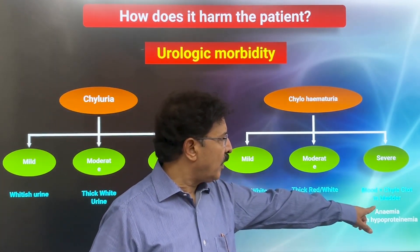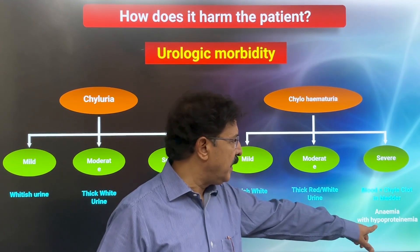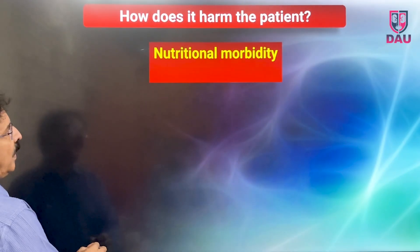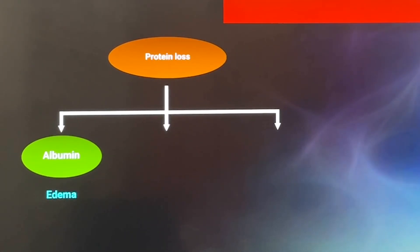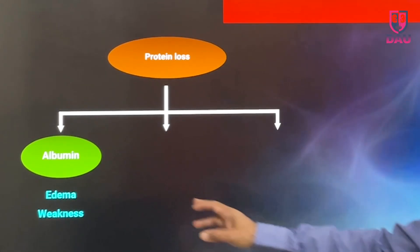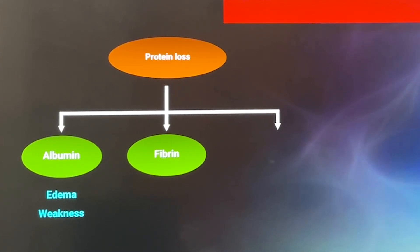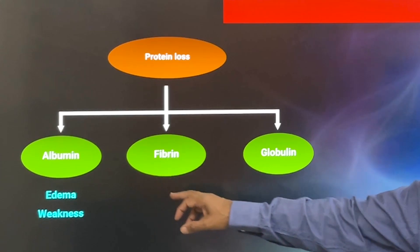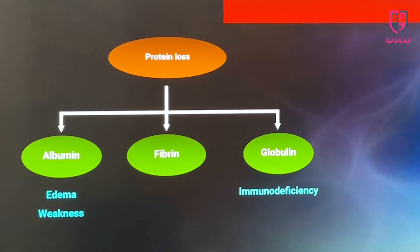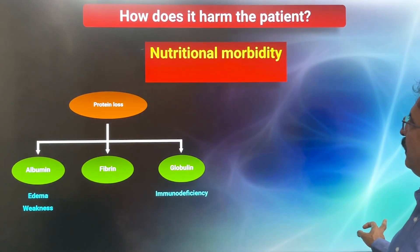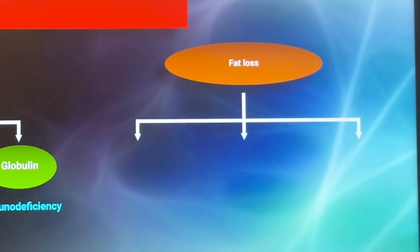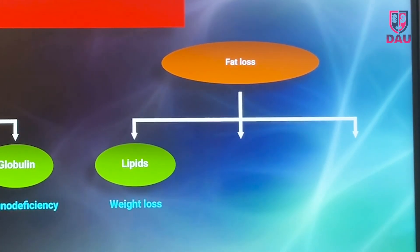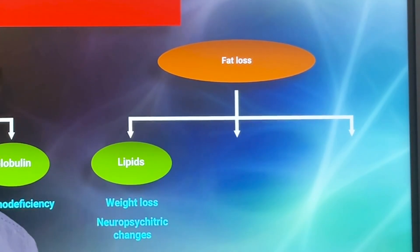When blood and chyle clots form in the bladder, patients often develop significant anemia and hyperproteinemia. Regarding nutritional morbidity, there is protein loss — patients lose albumin, causing edema and profound weakness. Fibrin loss affects clot formation, and globulin loss leads to some immunodeficiency. They are also losing fat, and depending on the duration of fat loss, patients develop weight loss.